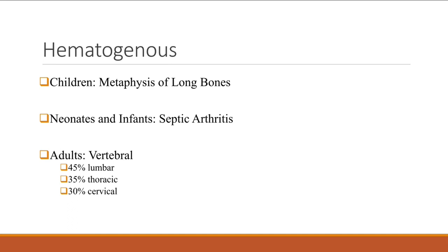Hematogenous osteomyelitis can be acute or chronic. In the acute setting, we see it in children and adults. The reason we talk about children is that chronic osteomyelitis in adults is often a result of acute osteomyelitis in children. Hematogenous osteomyelitis in children is usually in the metaphysis of long bones, and because of the circulation, you can see the long bones and joints affected.